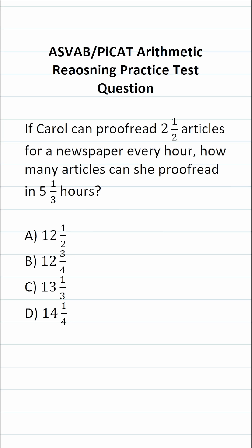In order to solve a question like this, we're going to use a proportion. A proportion is nothing more than two fractions that are set equal to, or proportional to, one another. Let's fill in this left-hand side of the proportion with the information we have. We know that she can proofread two and a half articles every hour.